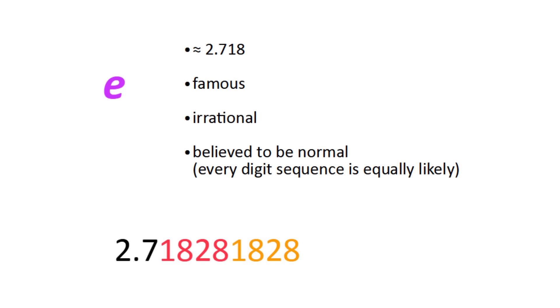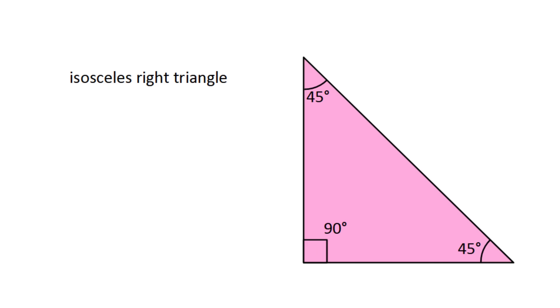Furthermore, the next six digits are 45-90-45. These are the angles on an isosceles right triangle, which is also known as a 45-45-90 triangle.